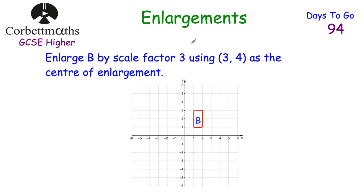Today we're going to be looking at enlargements — we'll start with positive integer scale factors such as 2 and 3, then look at fractional scale factors and also negative scale factors. Our first question is to enlarge shape B by scale factor 3, using (3, -4) as the centre of enlargement. Feel free to pause and think about how you would do that, then press play when ready.